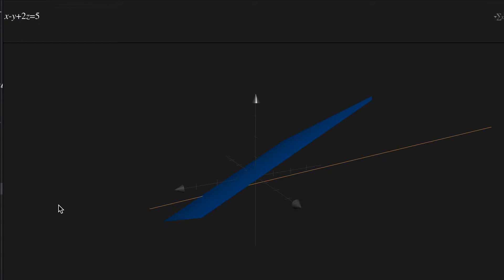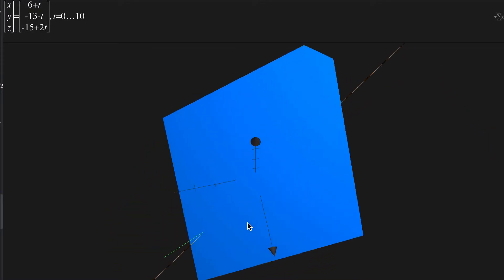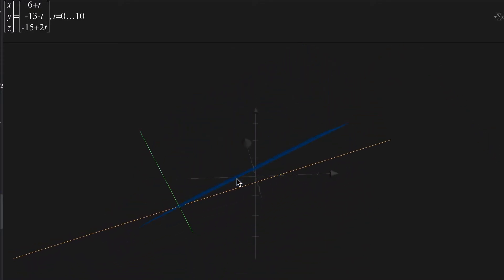Well first of all what we could do is find the angle between the normal vector. So I just put the normal vector right here. If we can find the angle between the normal vector and the line then we should be able to leverage that to get the angle between the plane and the line that we're given. So let's look at finding the angle between the normal vector of the plane and the direction vector of the line.